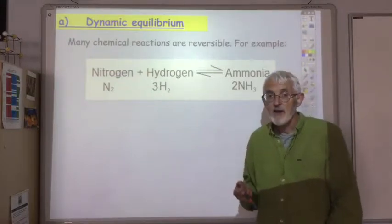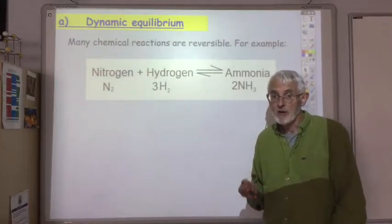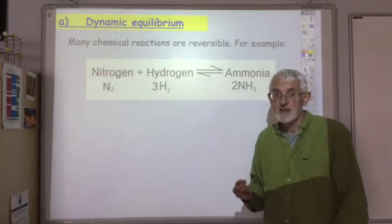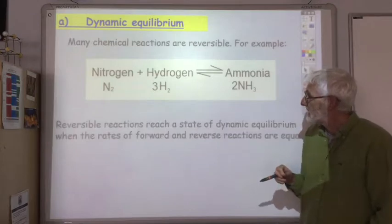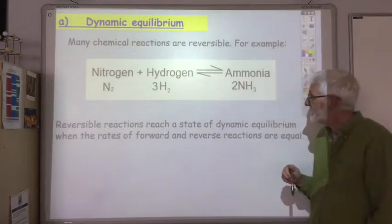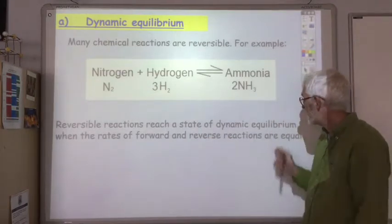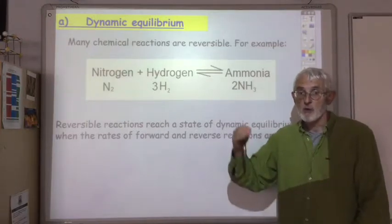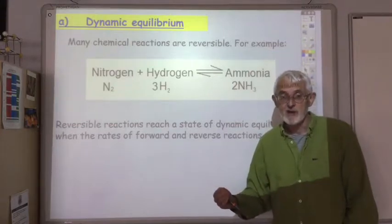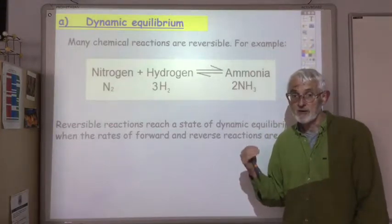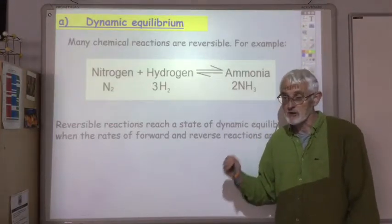Now, if you leave a reversible reaction long enough, it will eventually reach a state of equilibrium. And that is defined at the point at which the forward and reverse reactions are equal. So the rate at which ammonia has been produced is the same as the rate at which it's breaking down. So the concentration of the products and indeed the reactants no longer change.